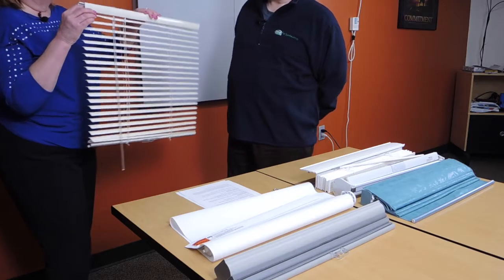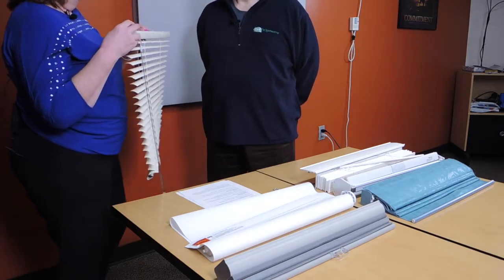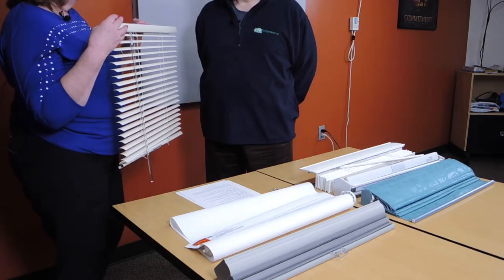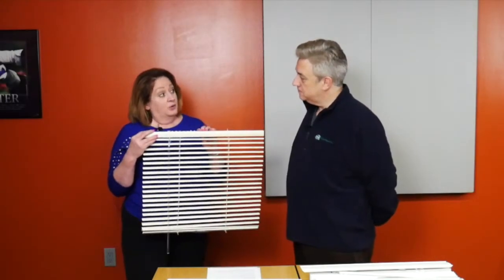So you're going to find that in the world of blinds and shades right now we're moving towards more cordless features. That's government regulated, they like to see more cordless due to child safety features. Gotcha. So this mini blind comes in probably about 30 different colors. We can get it in aluminum or vinyl.